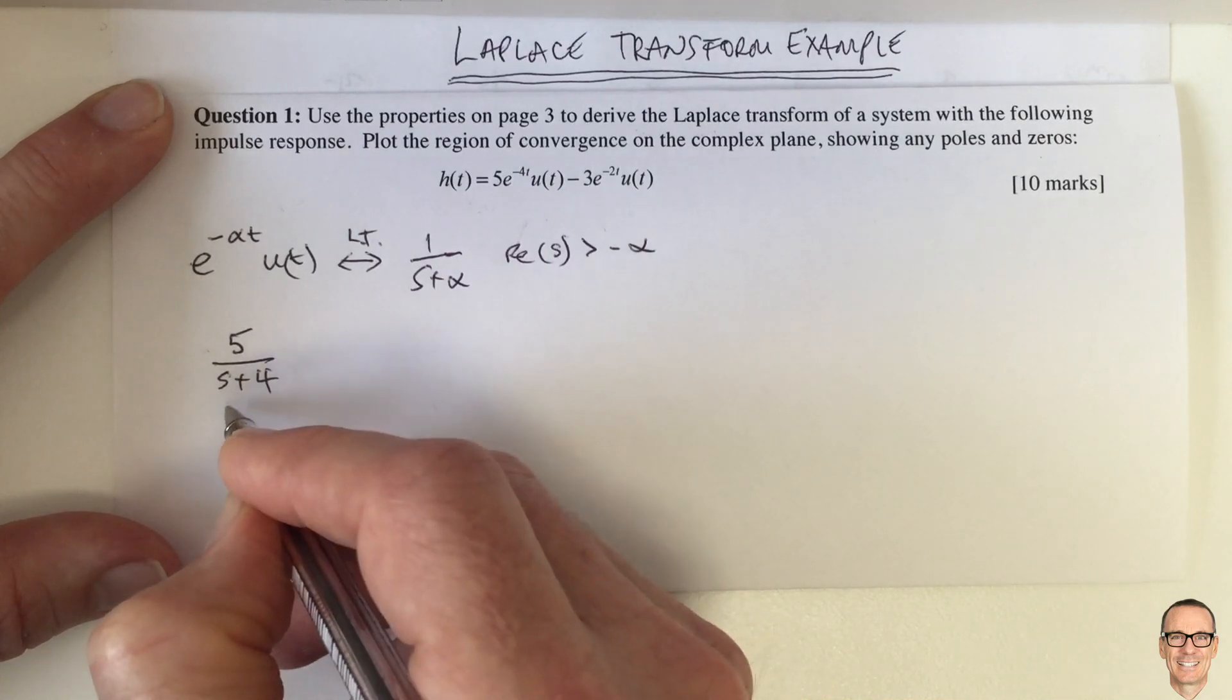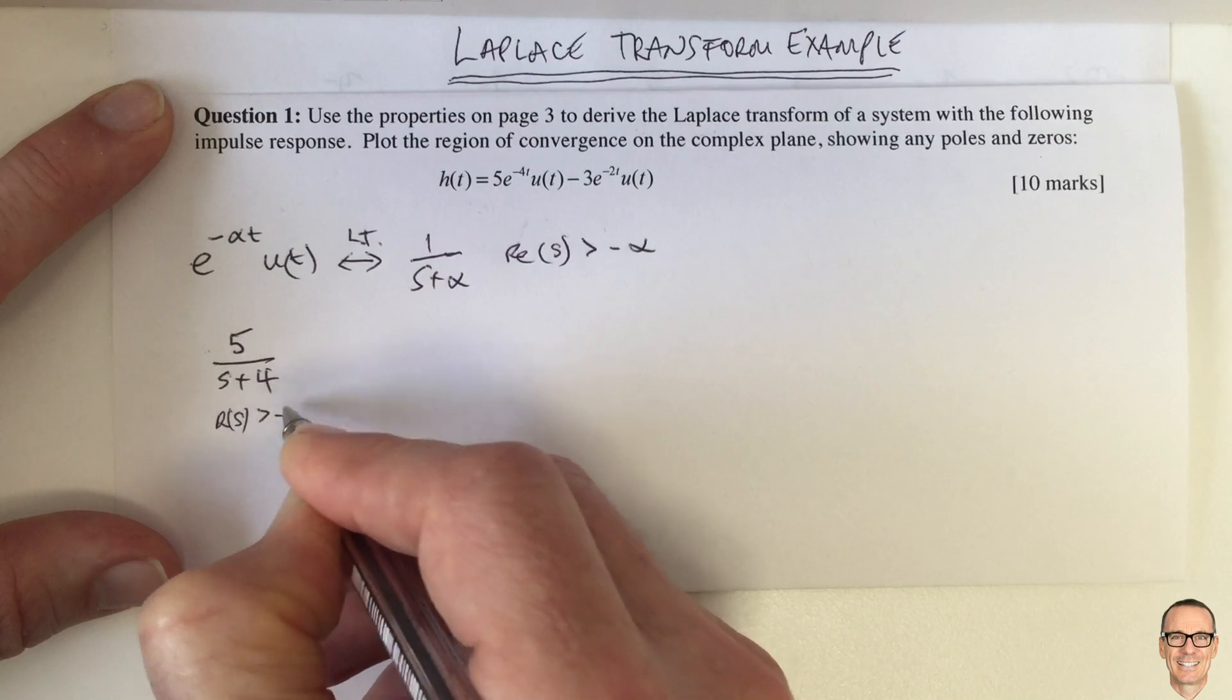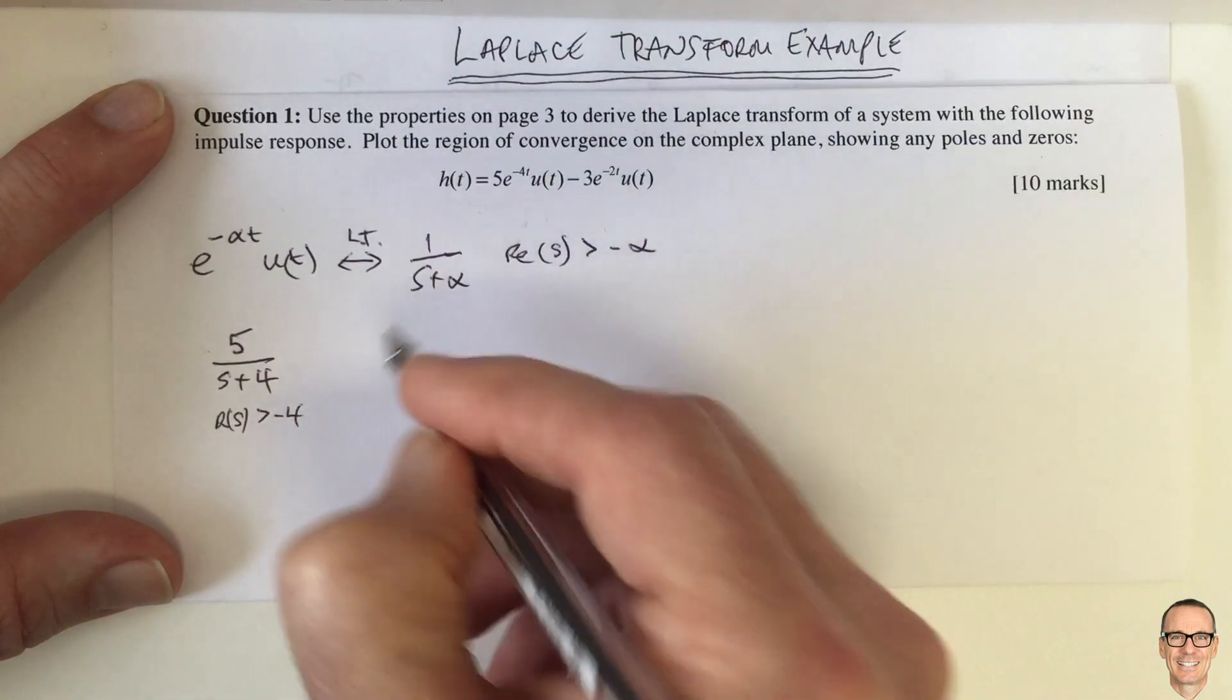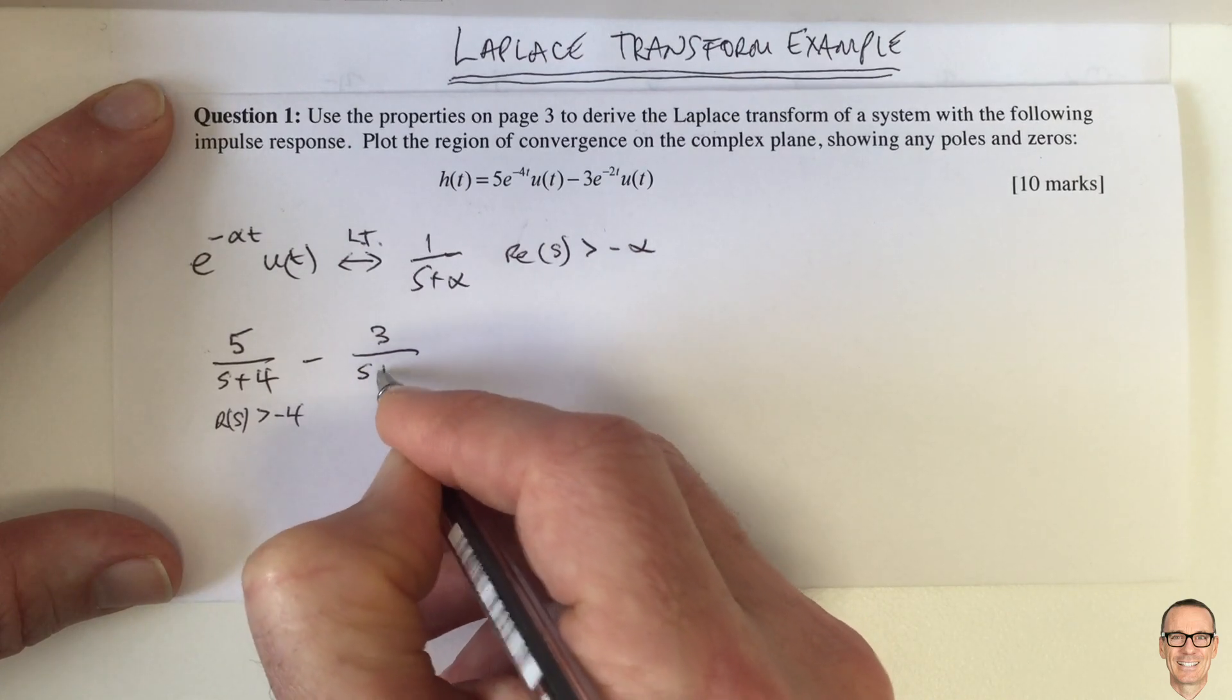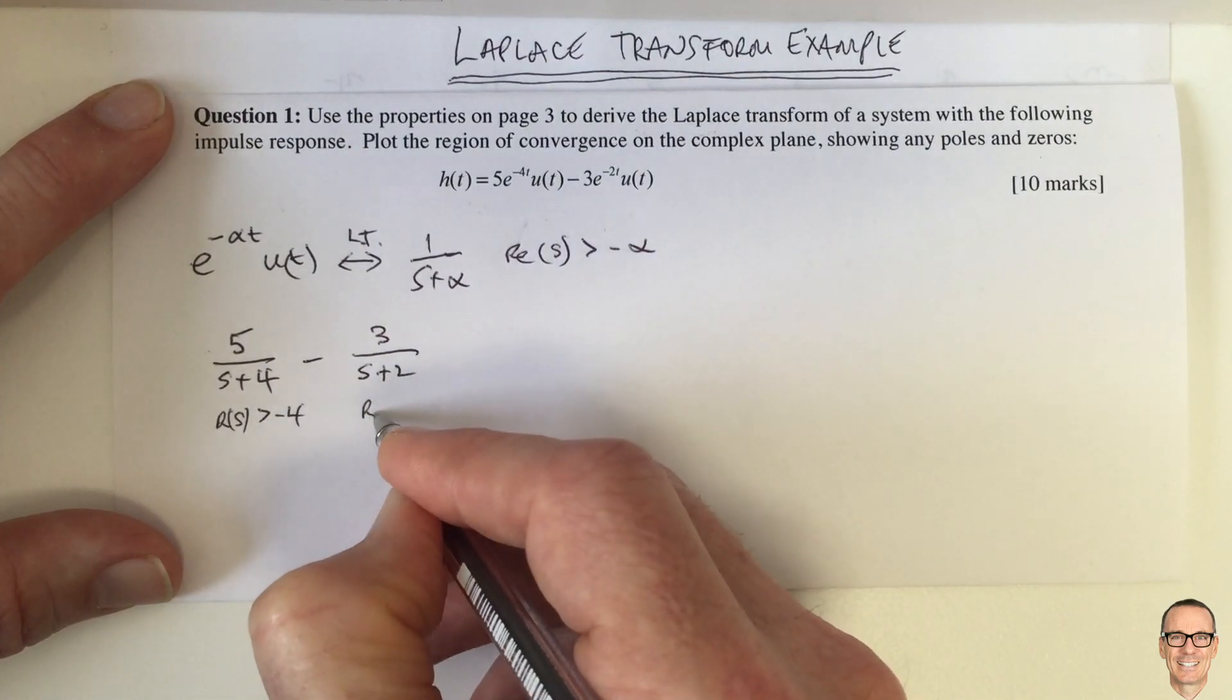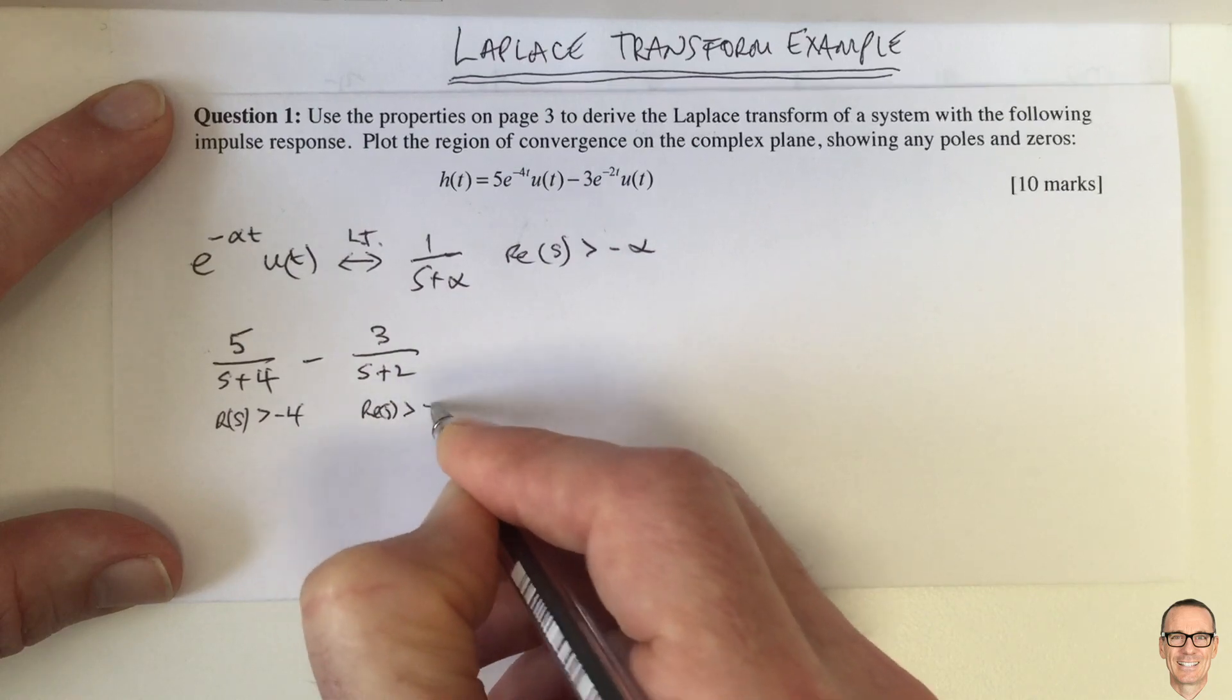And this first term holds for the real part of s bigger than minus 4. And then we've got minus 3 times that 1 over s plus 2, and this one holds for the real part of s bigger than minus 2.